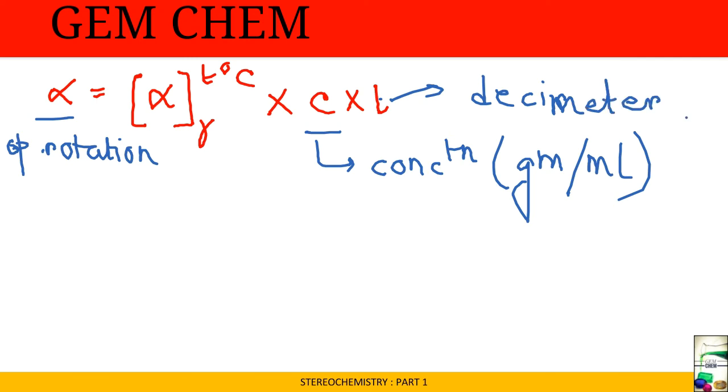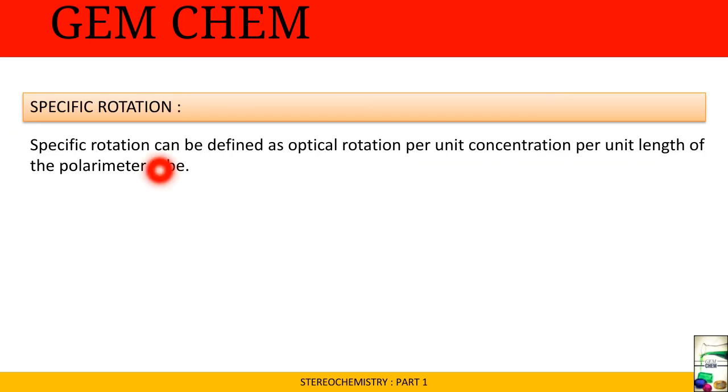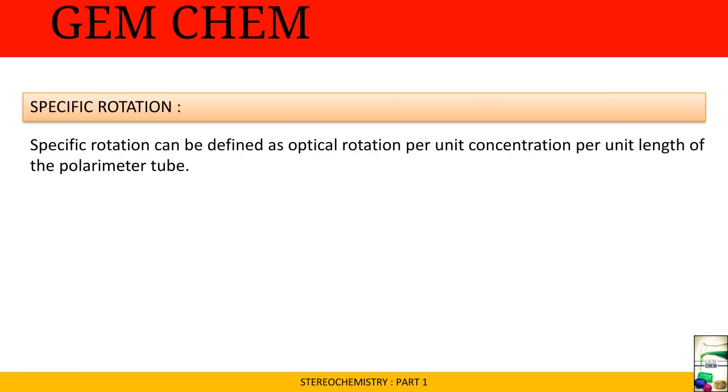This parameter is known as specific rotation. This constant depends on nature of the substance and can be written as alpha divided by C times L. Specific rotation can be defined as optical rotation per unit concentration per unit length of the polarimeter tube.